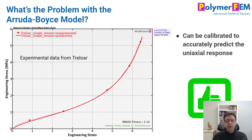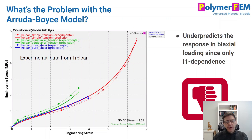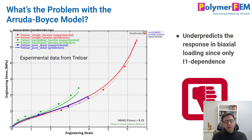Let's talk about the Arruda-Boyce 8-chain model. Here's some experimental data in the dashed line from Treloar — natural rubber — showing large strain tension. I can calibrate the Arruda-Boyce model very well to this data; it's very easy to do using MCalibration. But the problem is if you have experimental data from different loading modes. I have more data from Treloar: simple tension in red, biaxial tension in green, and pure shear in blue. When I try to match all of these loading modes using the Arruda-Boyce model, it doesn't quite work, and the model will overpredict the uniaxial in order to compensate. Not so good — the average error is about 8.29% in this case.